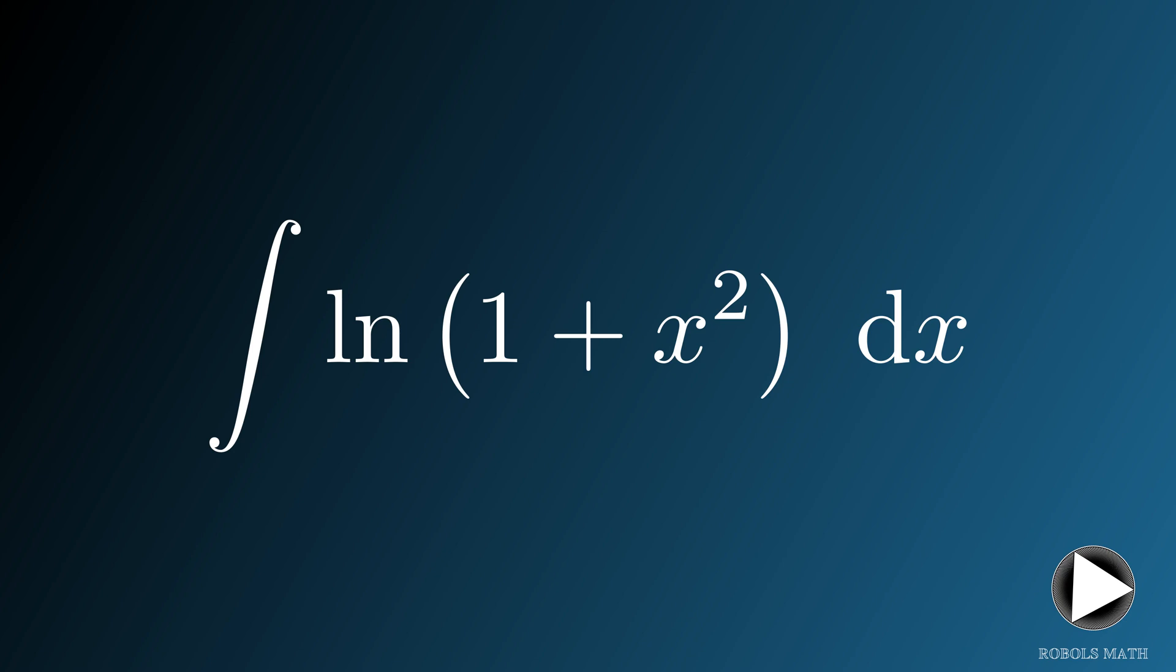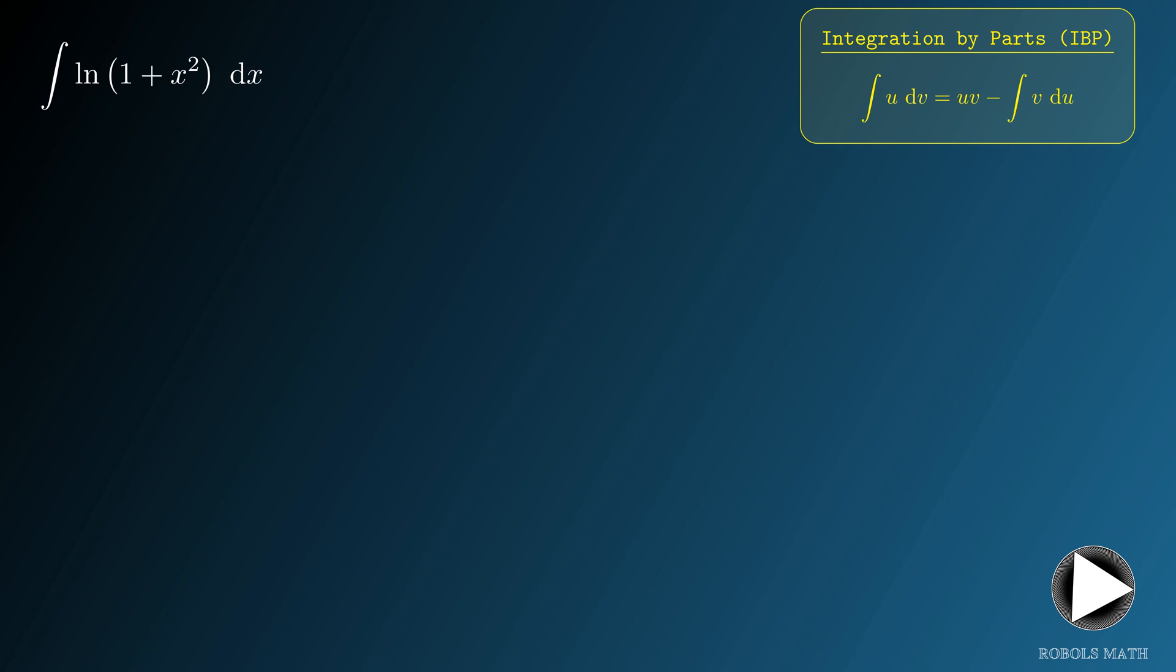Whenever we're dealing with the integral of logarithmic functions, a good first step is to consider integration by parts. In doing so, we generally would let u be the logarithmic term. By doing that, the logarithm effectively vanishes since the derivative of a logarithmic function no longer involves a logarithm.